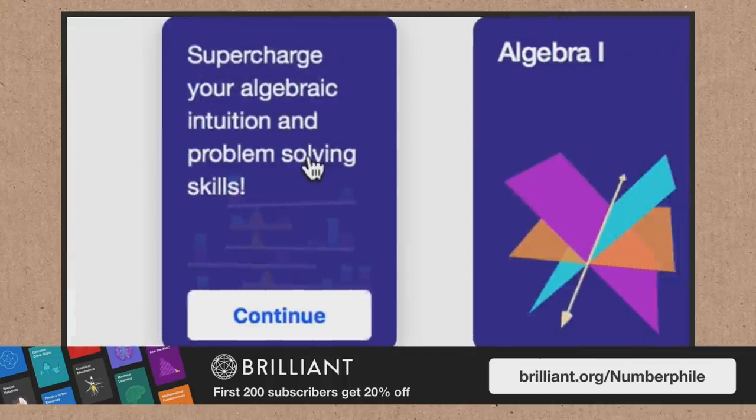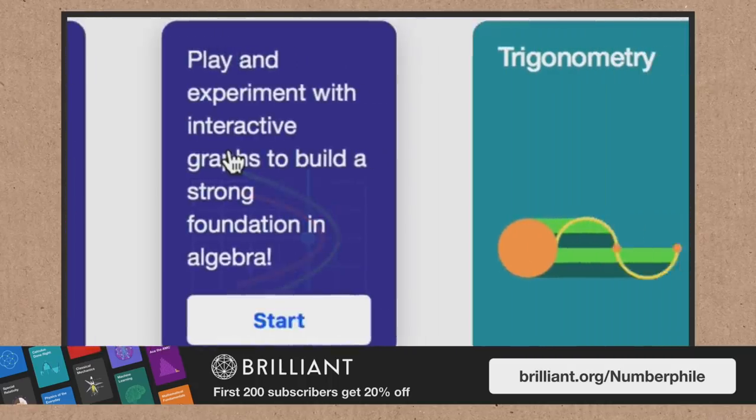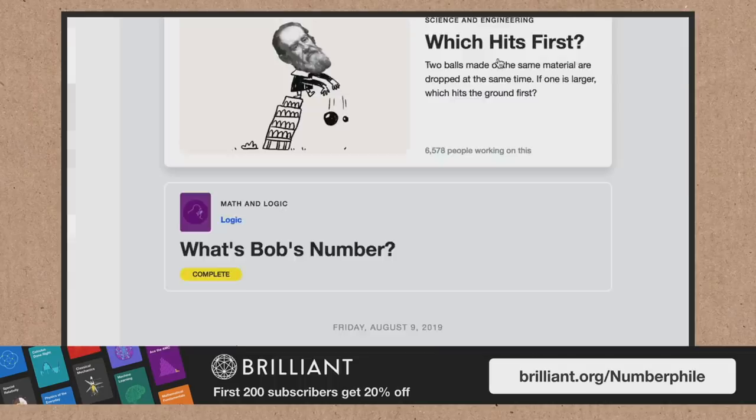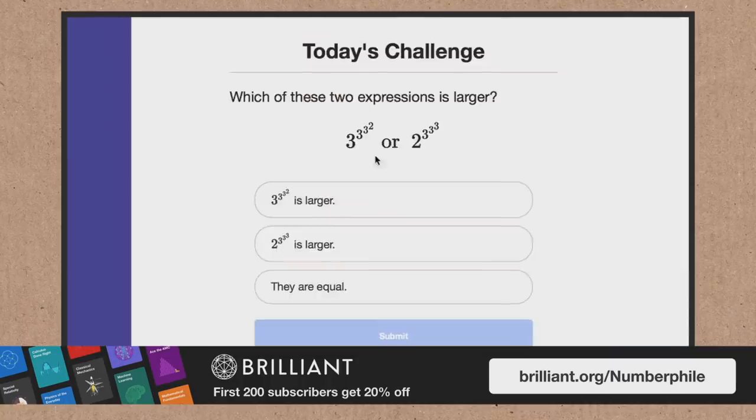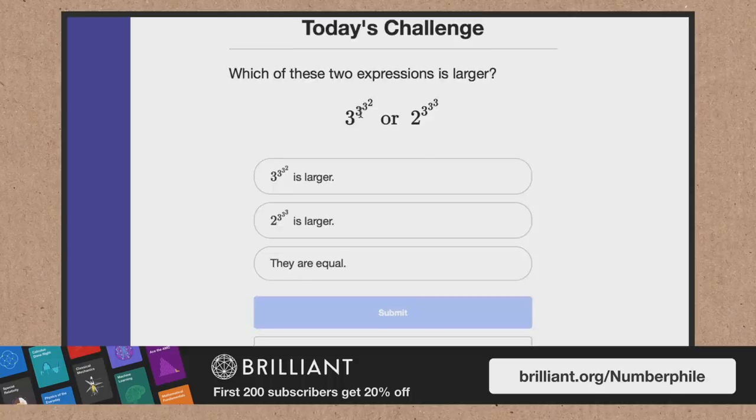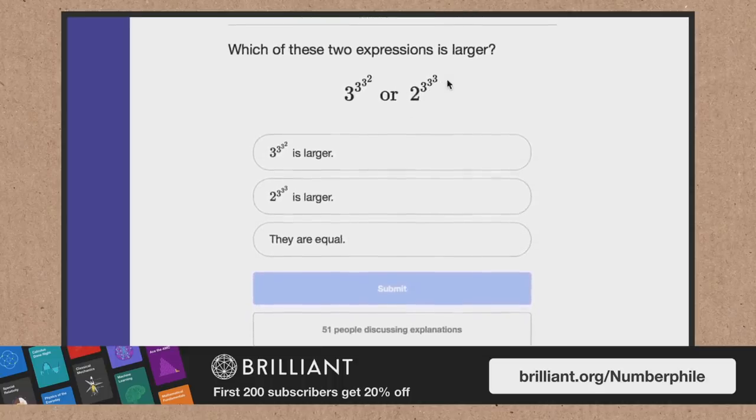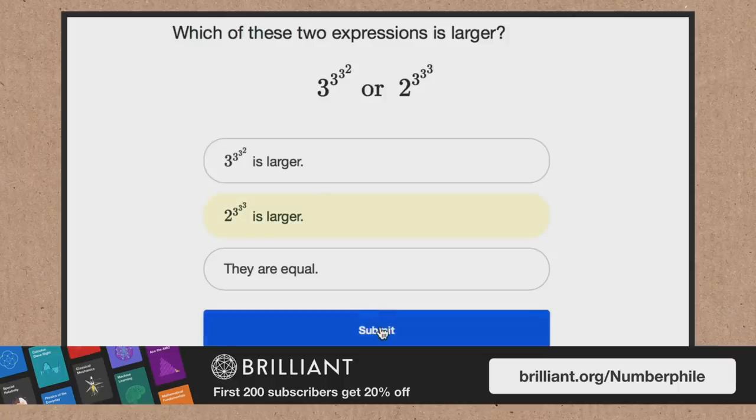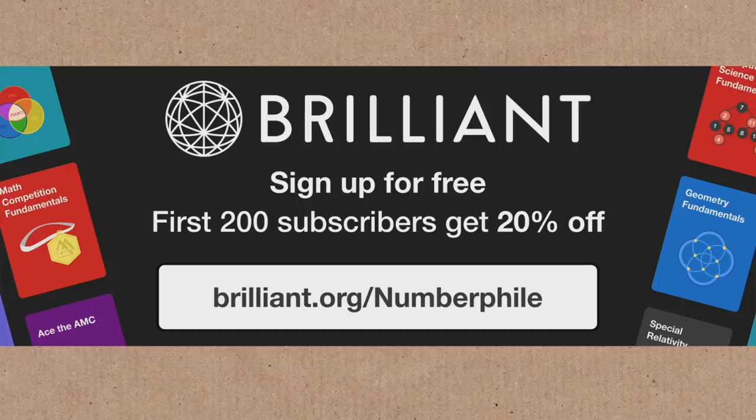Look at all the courses they've got. Look at them all. Algebra fundamentals. Algebra one. Algebra two. Trigonometry. Pre-calculus. Also I will recommend the daily challenges. These are always great fun. Power tower comparison. Which of these two expressions is larger? Three to the three to the three to the two or two to the three to the three to the three. What do you reckon? I'm gonna go that one. Am I right? Anyway people, go to brilliant.org slash numberphile. There's loads of stuff on there for free but if you use that slash numberphile you're gonna get 20% off a premium membership and that unlocks all the good stuff. Everything on Brilliant you've got access to. Brilliant.org slash numberphile. Our thanks to them for supporting this episode.